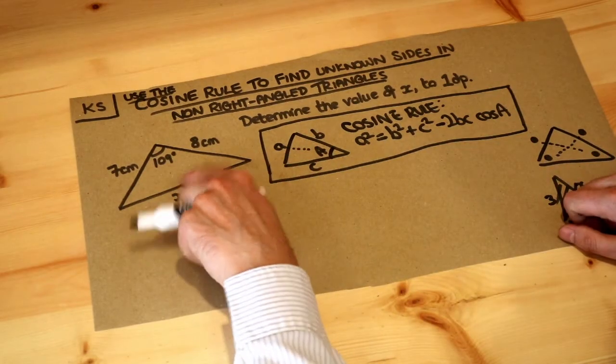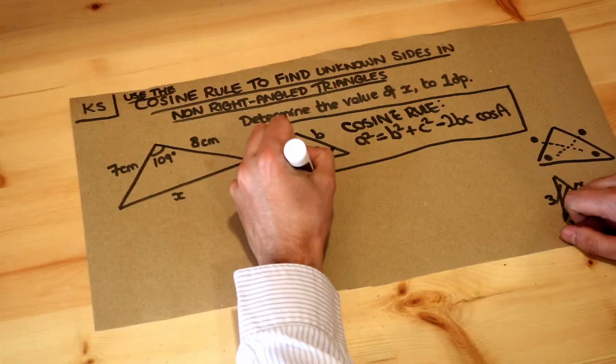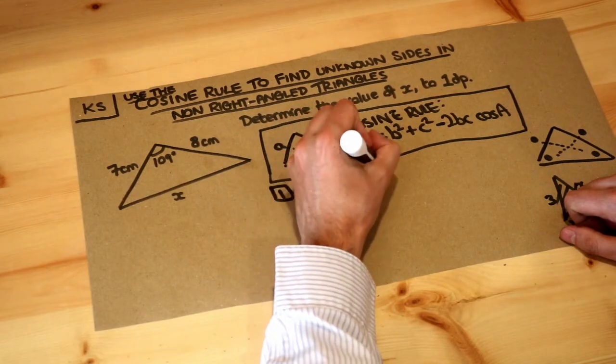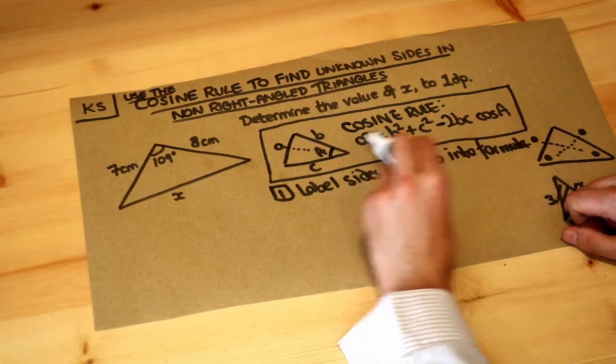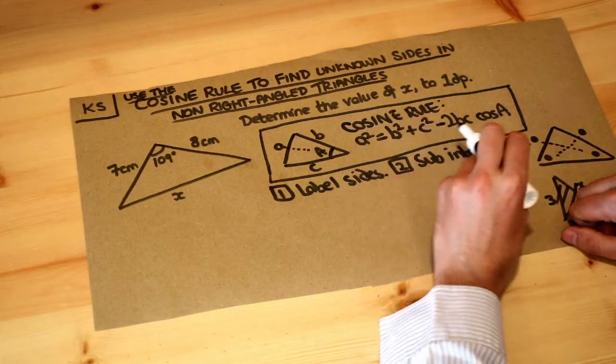So let's label the sides first. We're going to label the sides and then substitute into our formula and solve. Well, let's look at this formula. What's the only angle involved in this formula?